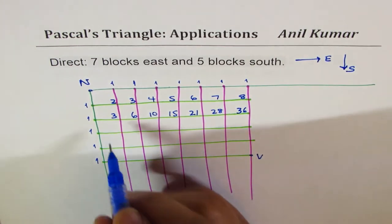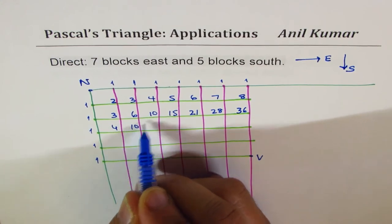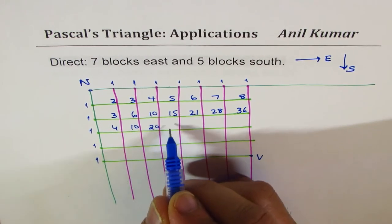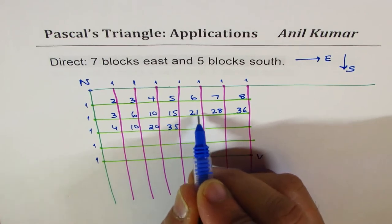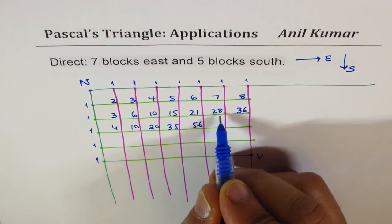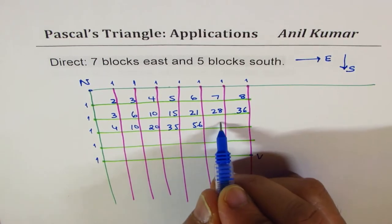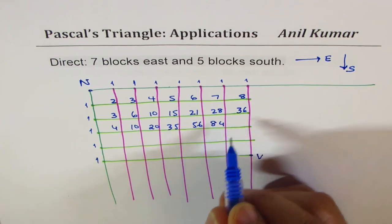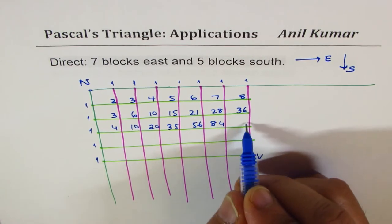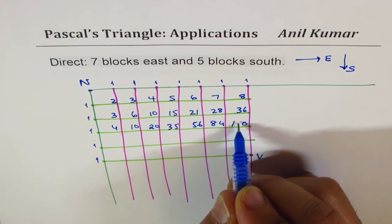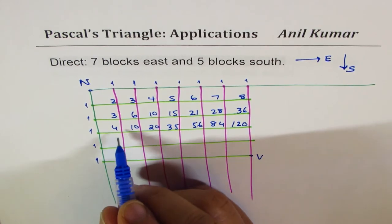Now the next one: one plus three is four, four plus six is ten, ten and ten is twenty, twenty and fifteen is thirty-five. And when you add this up, you get fifty-six, six and eight is fourteen, eighty-four. And that makes it ten and one, twelve, one hundred and twenty.